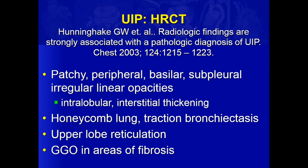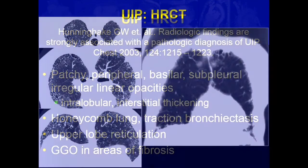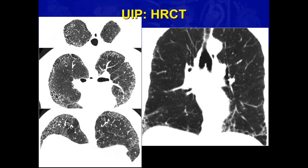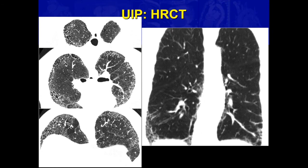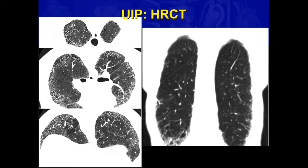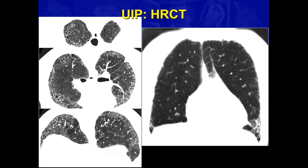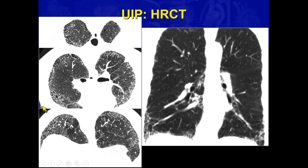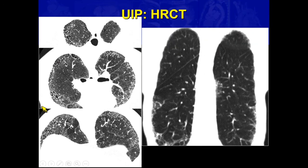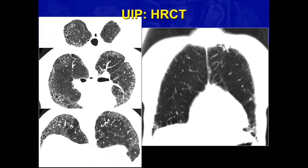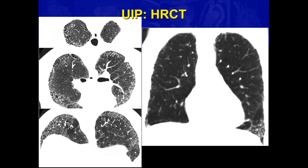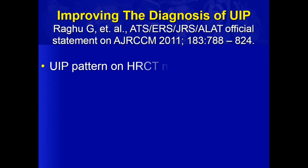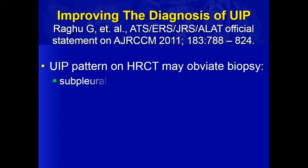When we see this on a CT scan in the proper context, we don't need a biopsy. If you look at the coronal image here, you can see the basal reticulation in the bases and how there's that gradient from apex to base — that's something we expect to see with UIP. We've got pretty clear subpleural cystic change that we could probably agree is descriptive of honeycombing. When we see this CT scan, we know that we're dealing with definite usual interstitial pneumonia, and when we see that pattern, we don't need a biopsy.